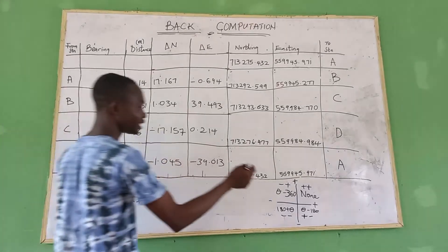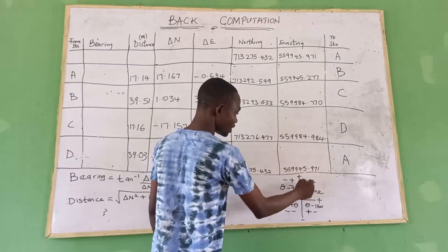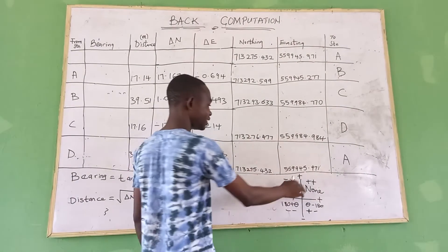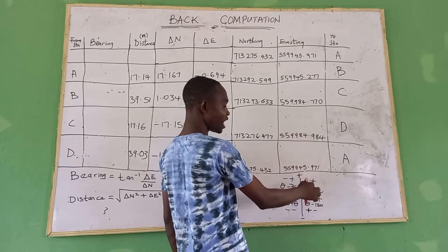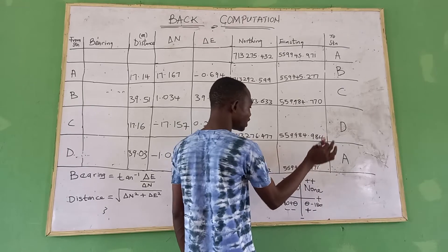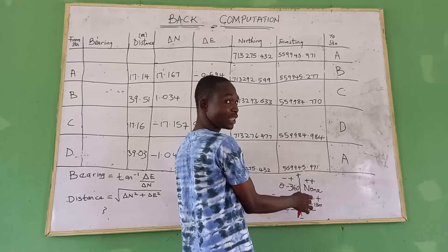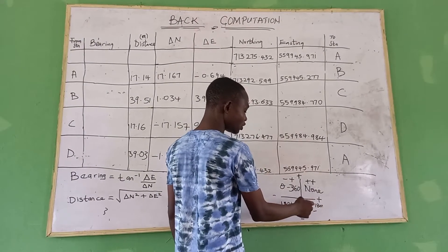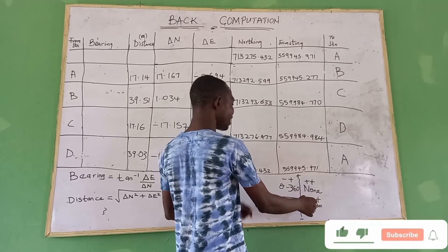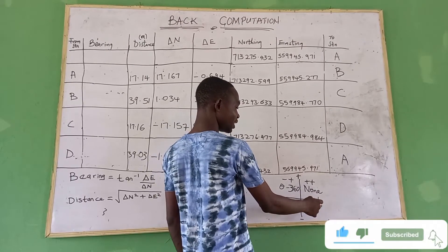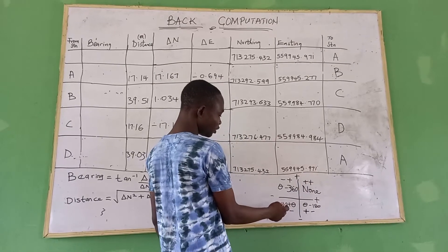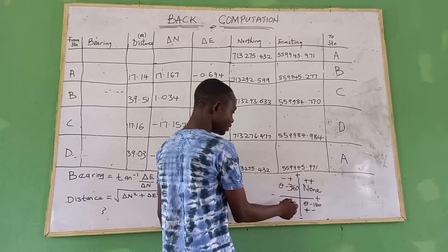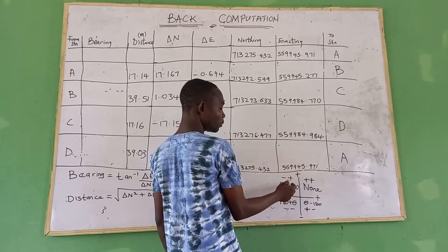This leads us to the quadrant diagram — first, second, third, fourth — using the CAST rule. Any value falling in the first quadrant is going to be positive. Any value falling in the second quadrant: subtract that value from 180. For the third quadrant, add to 180. For the last quadrant, subtract from 360.